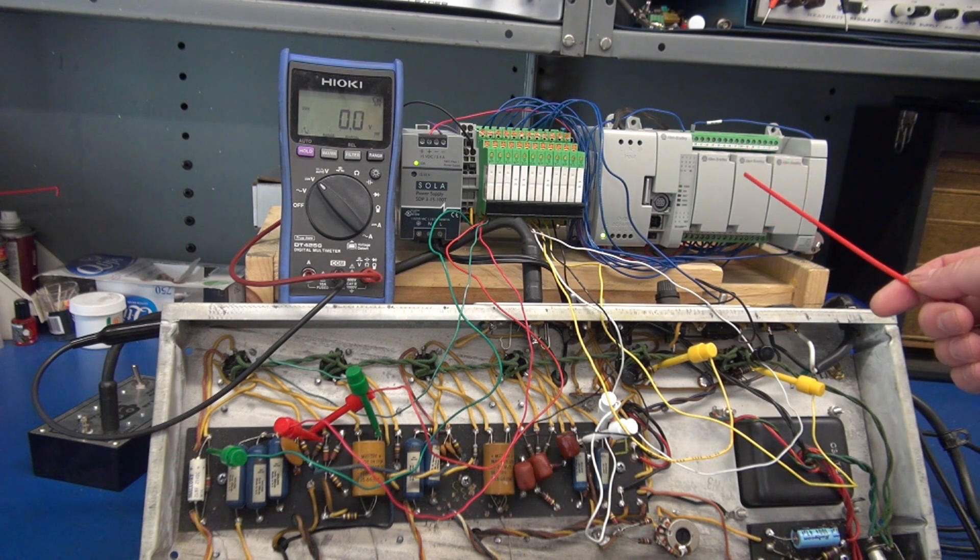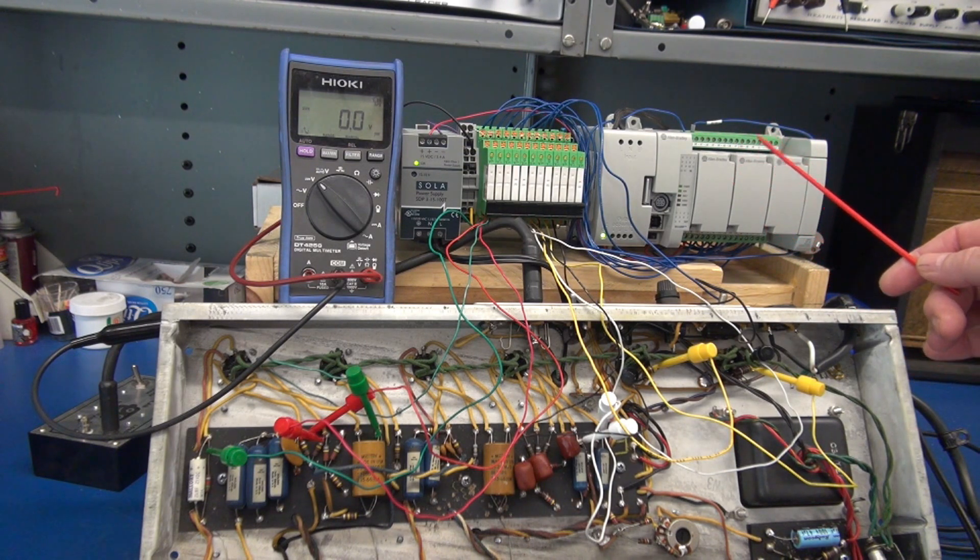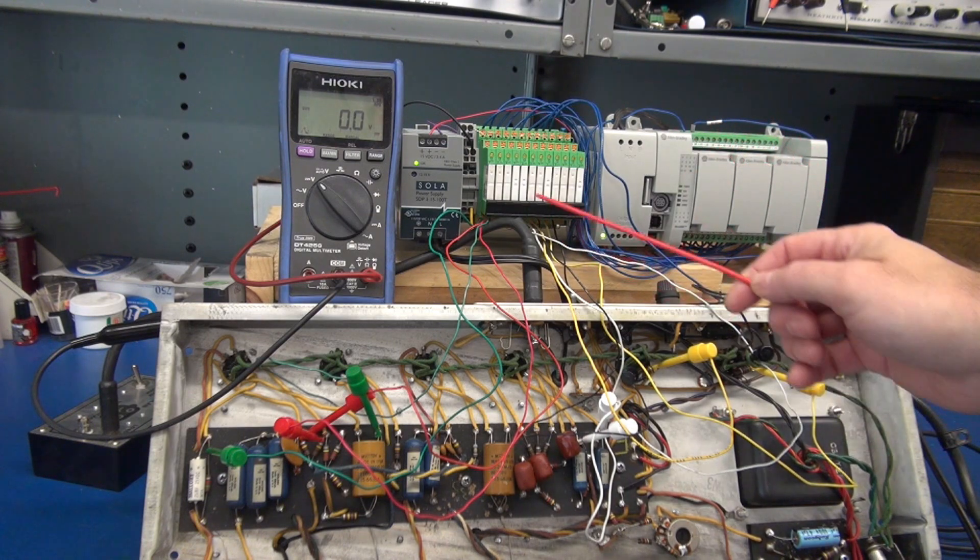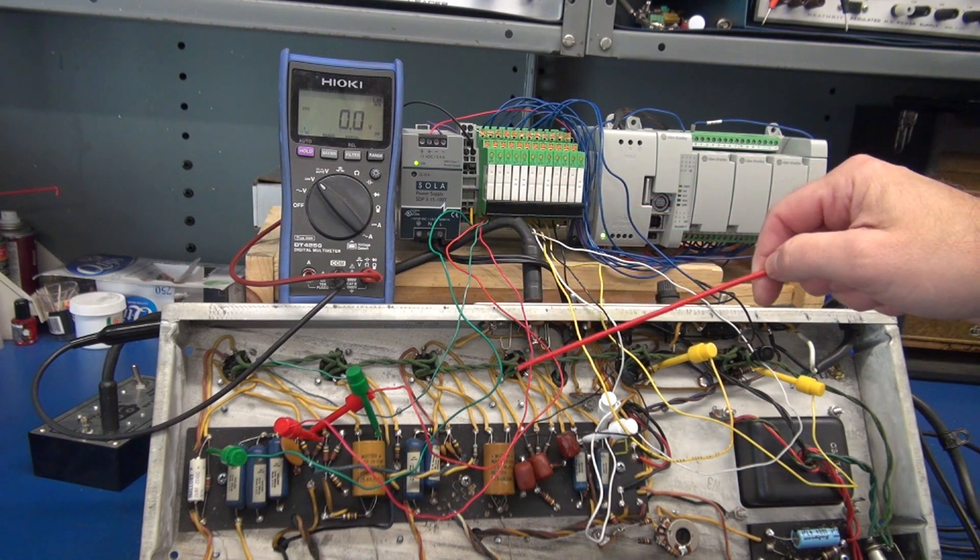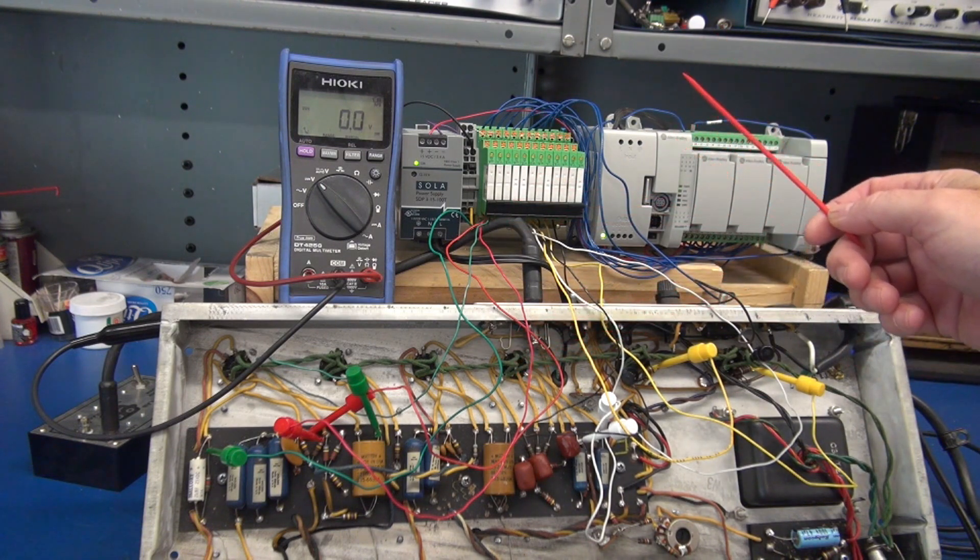All right, here's our test setup. We have an Allen-Bradley Micro 830 PLC. It has 10 digital outputs. Those digital outputs go to these Phoenix relays, which isolate the high voltage of this amp from getting into my PLC.